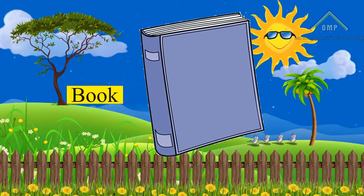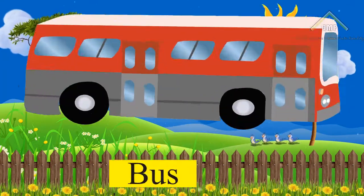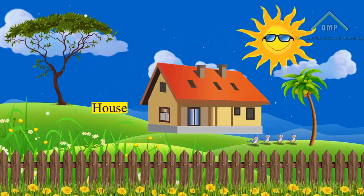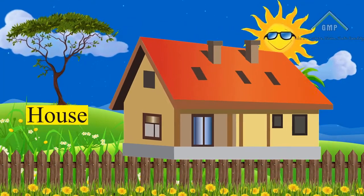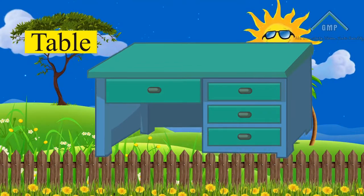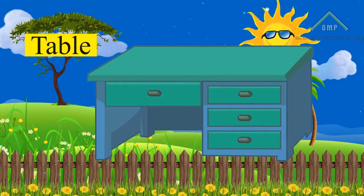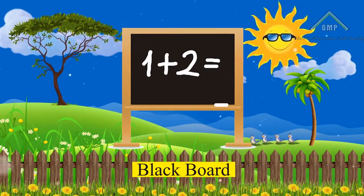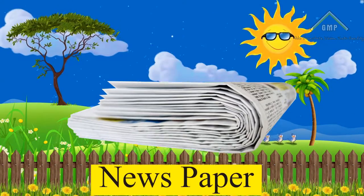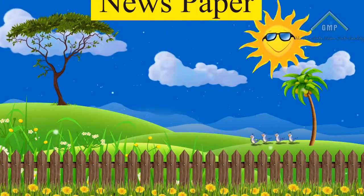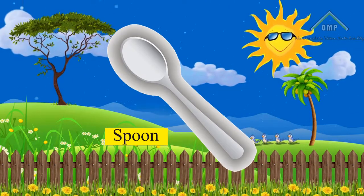Examples of non-living things: 1. Book. 2. Bus. 3. House. 4. Table. 5. Blackboard. 6. Newspaper. 7. Spoon.